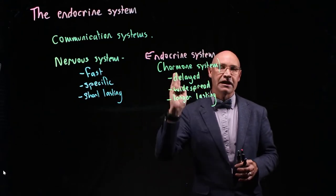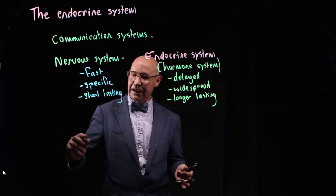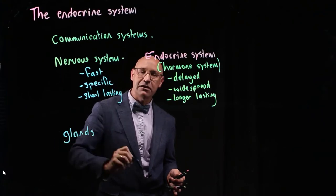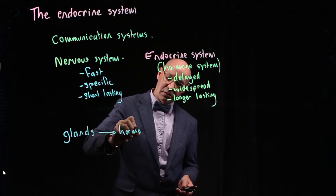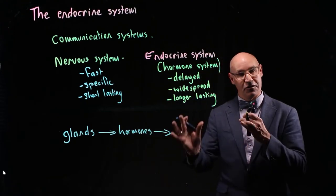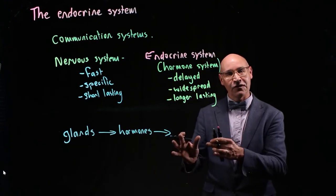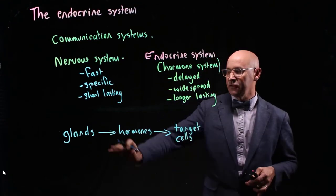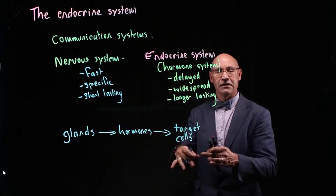Hormones are made by parts of the body called glands. The hormones spread through the body, usually by the blood in the circulatory system, and they act on specific cells that we call target cells. So they're produced by the glands, sent through the circulatory system, and affect target cells.